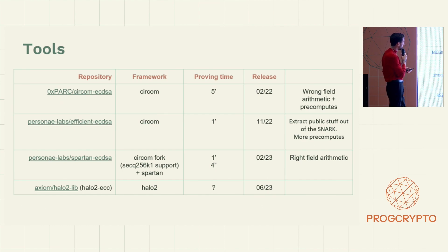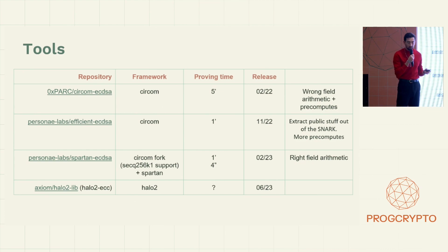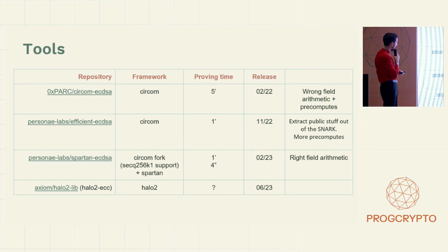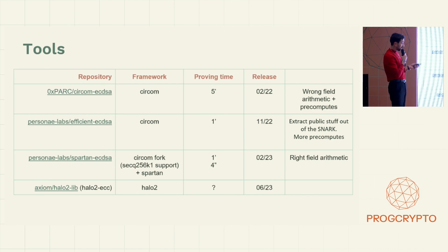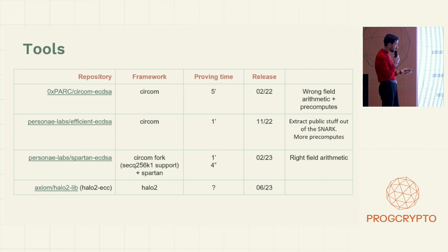With the following tools you can perform ECDSA signature verification in a SNARK. The first, circom-ecdsa, built by 0xPARC, uses circom and can generate proofs in around five minutes, but outside the browser. Outside the browser is bad for privacy because you don't want to leak to a server the link between your proof inputs and your proof result. To fulfill this need for client-side proving, Privacy & Scaling Explorations improved on circom-ecdsa and built efficient-ecdsa, and then spartan-ecdsa. Spartan-ecdsa combines Spartan from Microsoft with a fork of circom — by forking circom they could pick a curve compatible with native field arithmetic — which greatly decreases the circuit size and allows proofs to be built in less than five seconds.